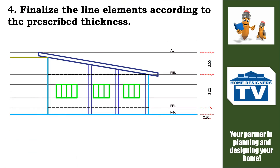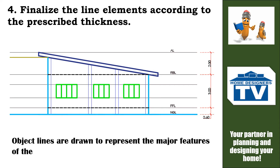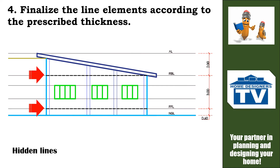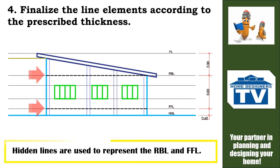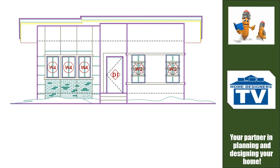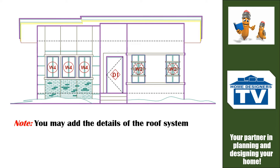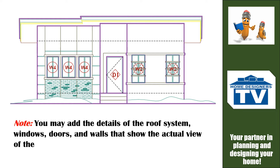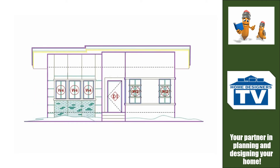Step 4: Finalize the line elements according to the prescribed thickness. Object lines are drawn to represent the major features of the house — object lines are thick lines. Hidden lines are used to represent the RBL and FFL. Take note that in doing this, you may add the details of the roof system, windows, doors, and walls that show the actual view of the house. These lines are drawn in fine dark line as shown.